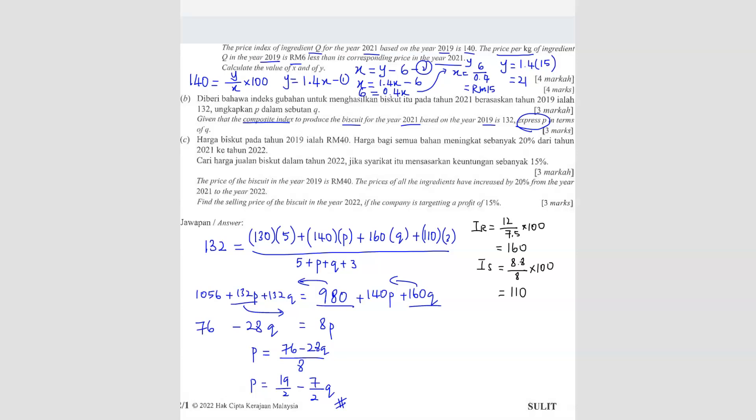The price of biscuit in 2019 — the cost is given. All the prices of ingredients have increased by 20%, so we know the price index from 2021 to 2022 will be 120. Find the selling price of the biscuit in 2022 if the company is targeting 15% profit.